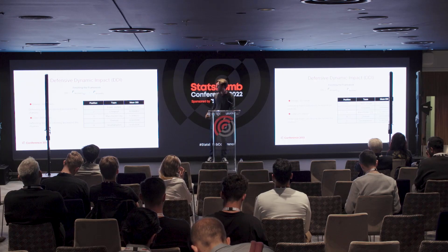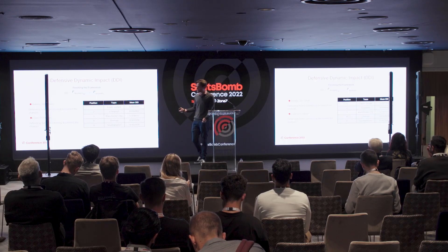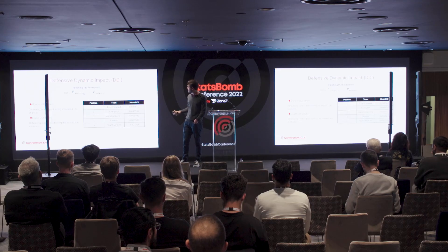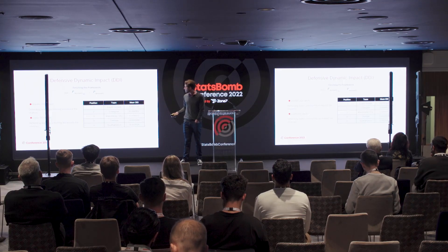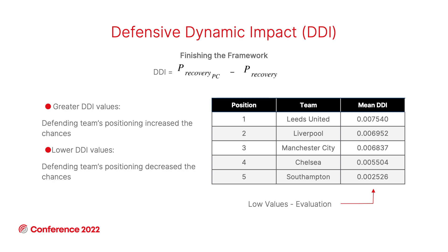The first application is the ranking of top teams by DDI. We can see Leeds United, Liverpool, and Manchester City at the top — the teams you'd expect to want the ball back as soon as possible, as mentioned in the first slide. Despite low absolute values in the evaluation, the model can identify which teams are better in DDI.